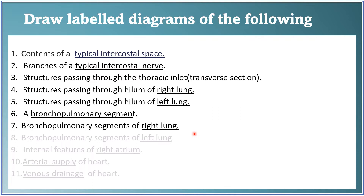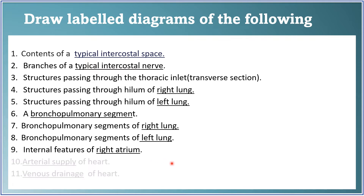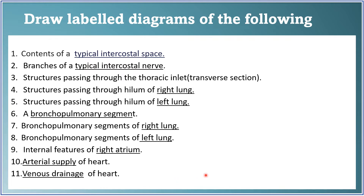Draw and name the bronchopulmonary segments of the right lung, and similarly for the left lung. The internal features of the right atrium are a very important diagram question: show all the veins opening into it (superior vena cava, inferior vena cava, coronary sinus, venae cordis minimae), the fossa ovalis, the right atrioventricular orifice, and the rough and smooth parts. Arterial supply of the heart and venous drainage of the heart can also come as labeled diagrams.